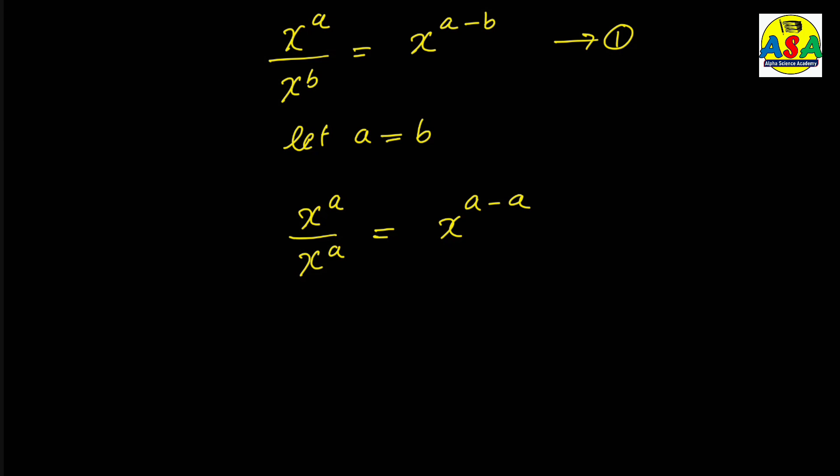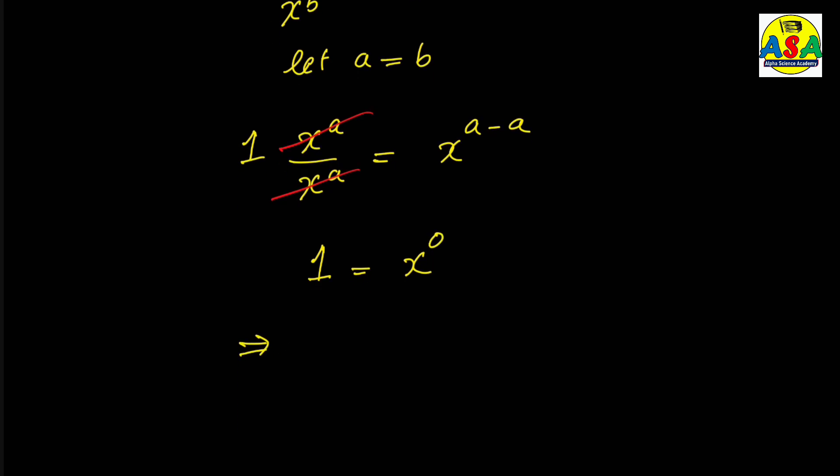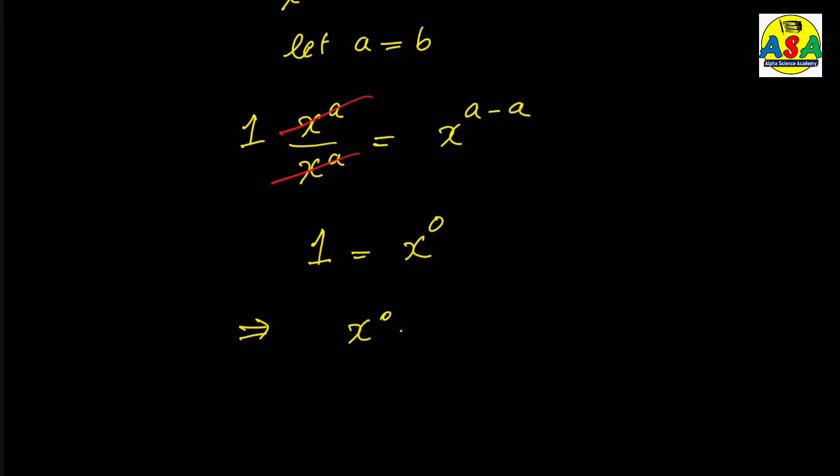So the left hand side is 1 and the right hand side is a minus a, which is 0. So it's almost done that x to the 0 is equal to 1. That's it, goodbye.